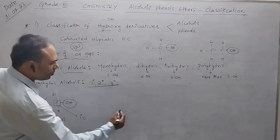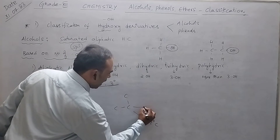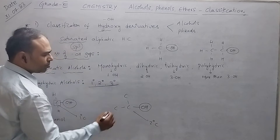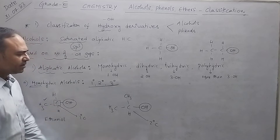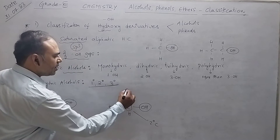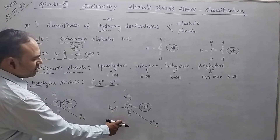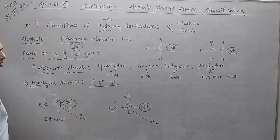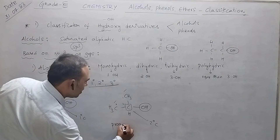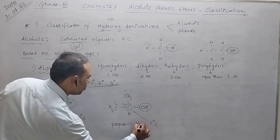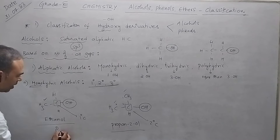For a secondary alcohol, the OH group is connected to a secondary carbon, which is connected to two other carbon atoms. For example, CH3–CH(OH)–CH3. The IUPAC name is propan-2-ol. This is considered a secondary alcohol.